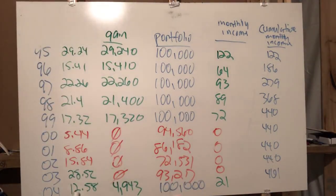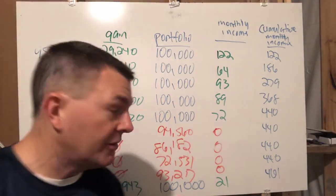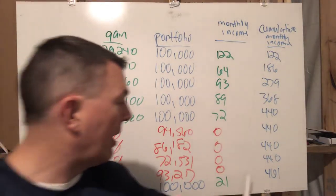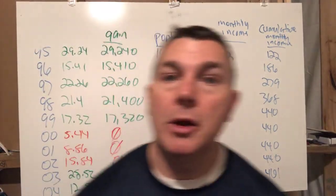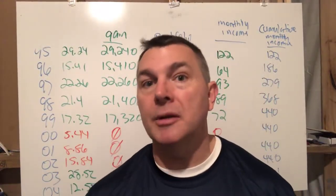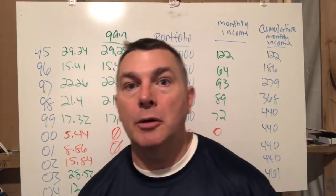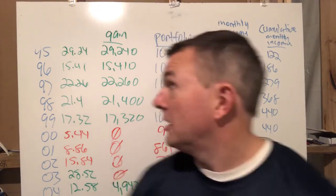Fast forward to the end of 2004: the market was up twelve point five eight percent. Twelve point five eight percent above ninety-three thousand two seventeen meant we had four thousand nine hundred forty-three dollars of gains. We annuitize that — that's another twenty-one dollars a month. So by the end of 2004 we have four hundred sixty-one dollars a month of guaranteed income, which is about five thousand five hundred dollars a year, and we still have a hundred thousand dollars in our portfolio.